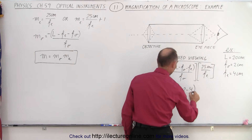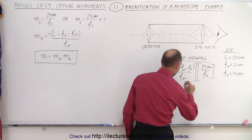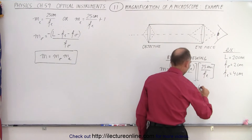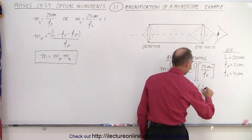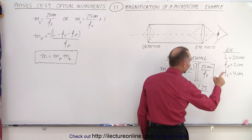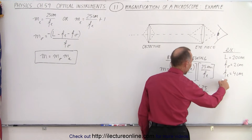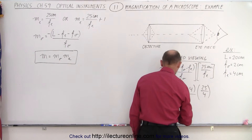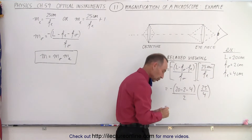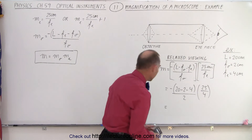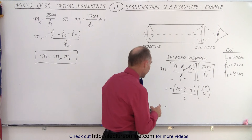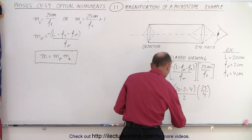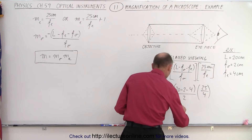The whole thing is divided by 2, then multiplied times 25 divided by the focal length of the eyepiece, which is 4. That gives us 14 divided by 2 — we don't even need a calculator — that's minus 7 for the magnification of the objective.